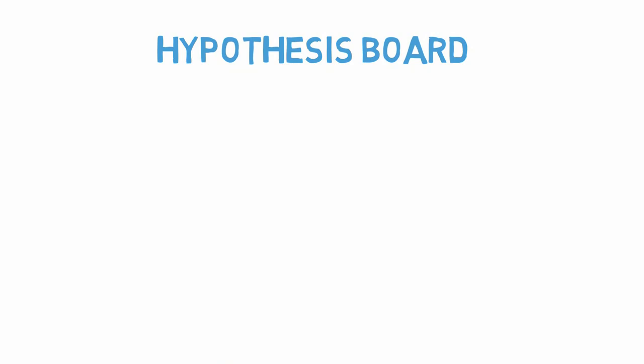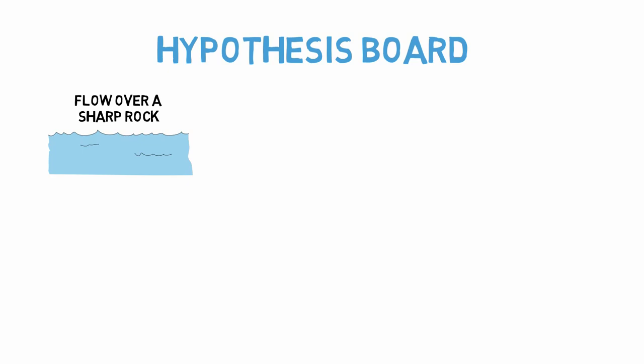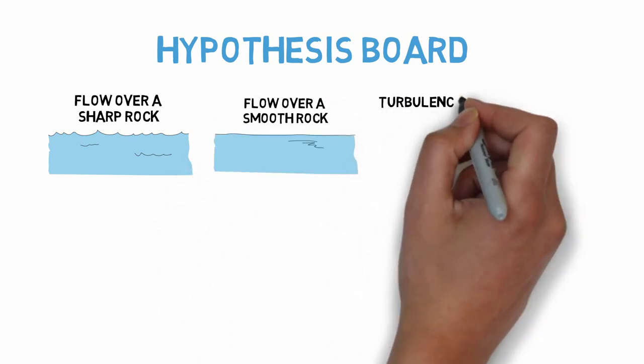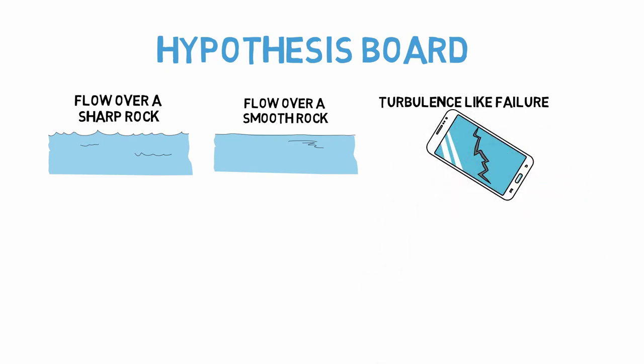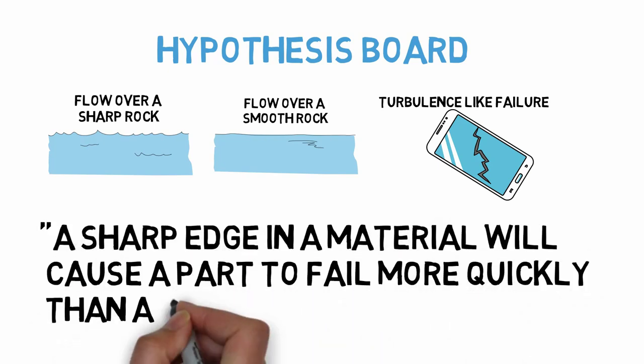Two pieces of knowledge will inform our hypothesis. First, that water flowing over sharp rocks is more likely to cause turbulence than smooth rocks. And second, turbulence in water could possibly be analogous to a solid material failing under load. Therefore, I will make the following hypothesis: a sharp edge in a material will cause a part to fail more quickly than a smooth one.